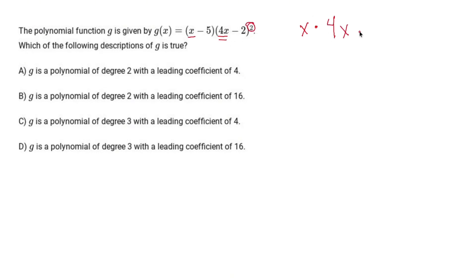So x times 4x times 4x is going to be 4 times 4, x times x times x, which equals 16x cubed.